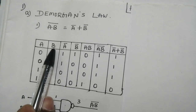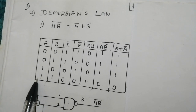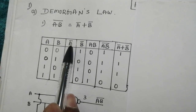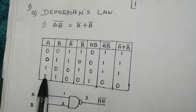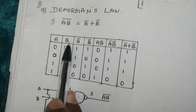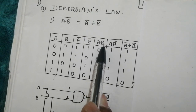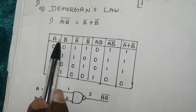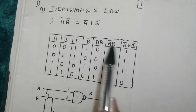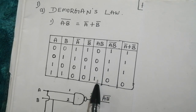We have two input variables, so these are the possible different input combinations. Next we have A bar, which is complement of input variable A. B bar, which is complement of input variable B. Next we have AB, that represents logical AND operation between A and B. So next we have AB whole bar, which is complement of AB.